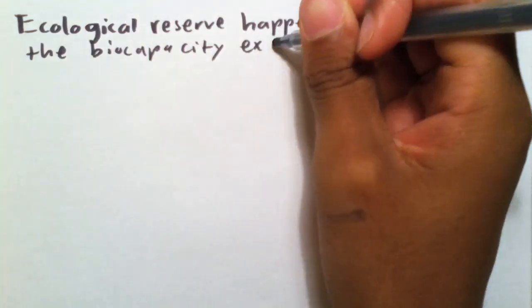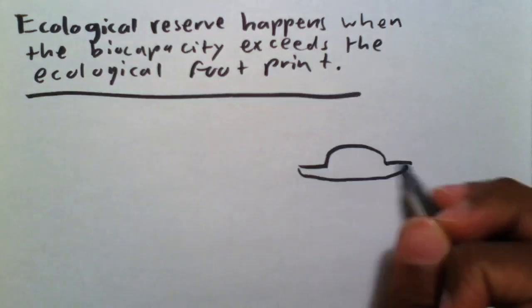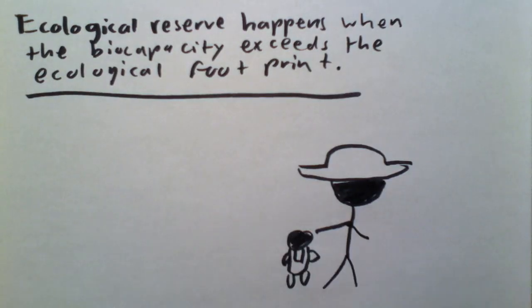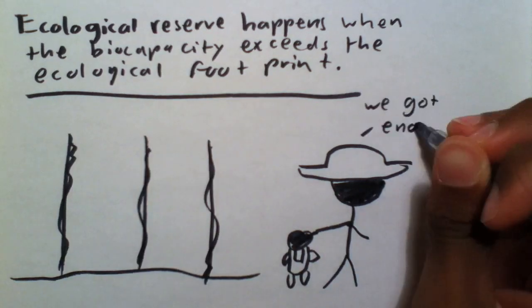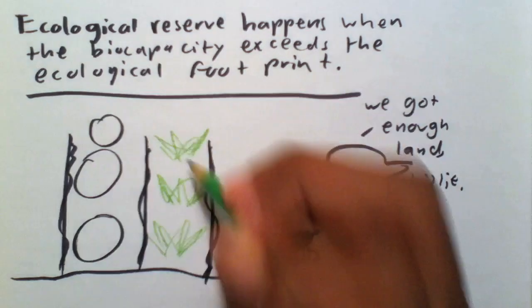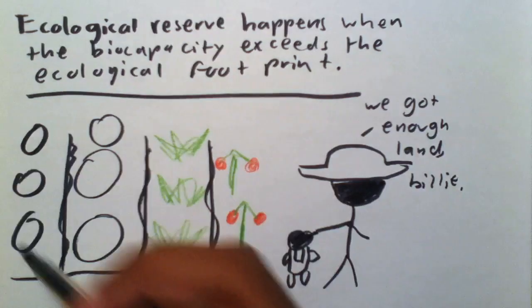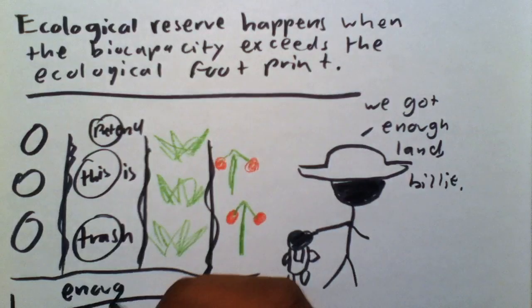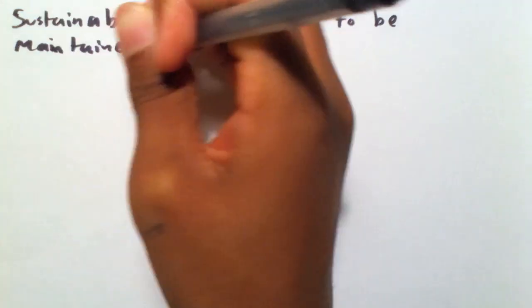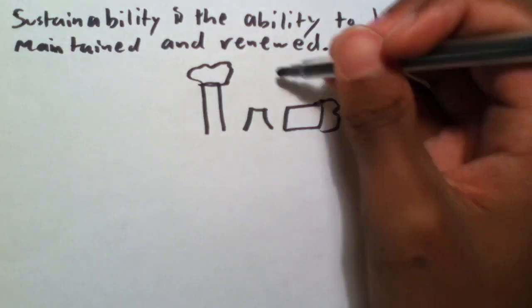Ecological reserve is when the bio-capacity exceeds the ecological footprint. It is easier for a nation to have an ecological reserve when they have a low population density and are more rural in customs. Sustainability is the ability to be maintained and renewed.